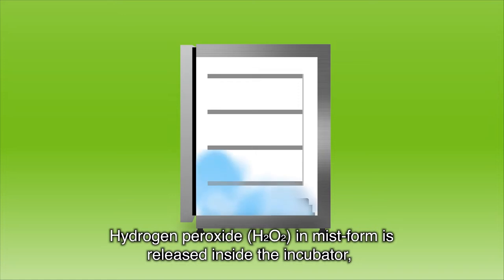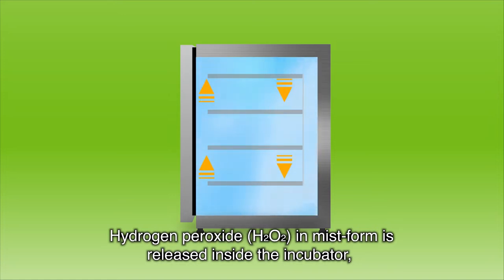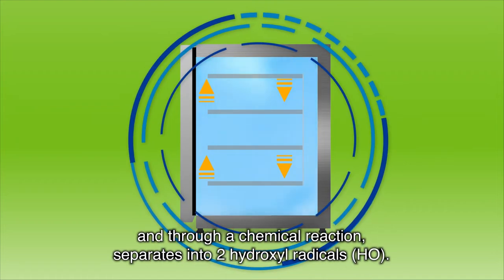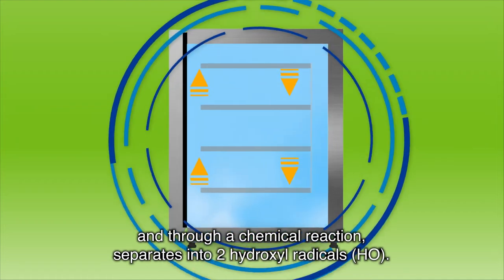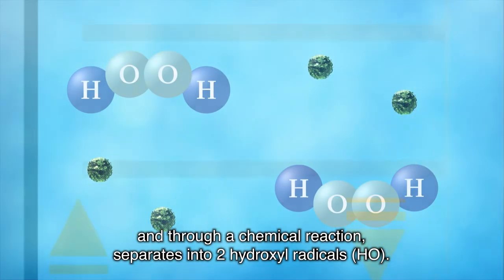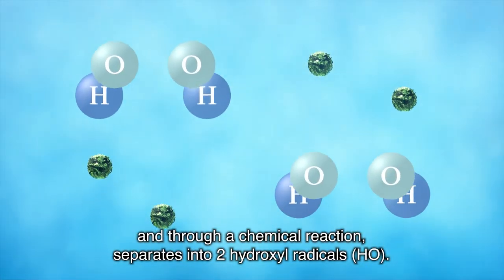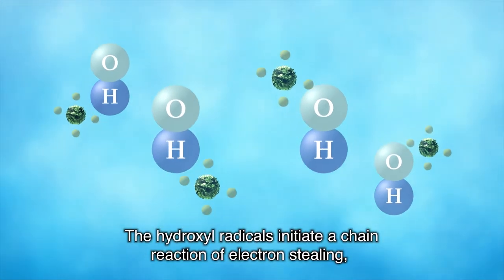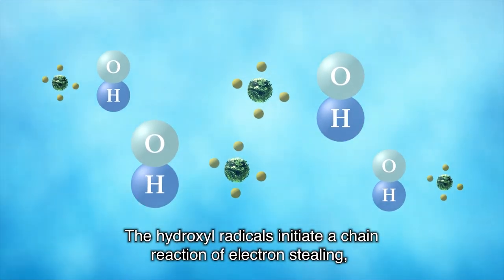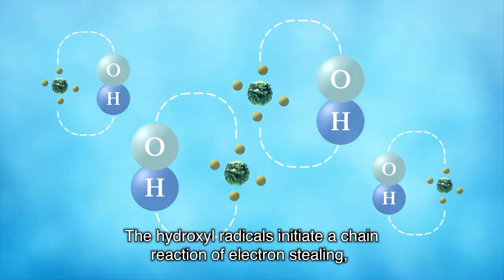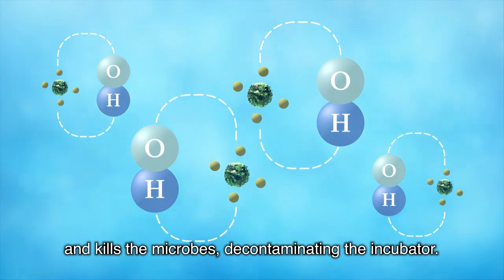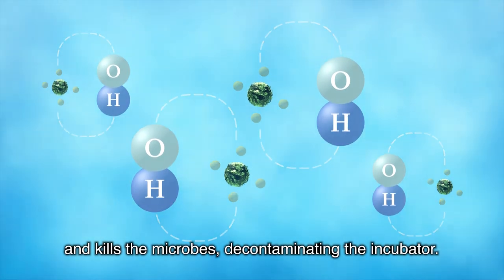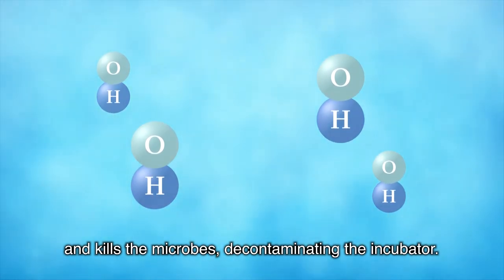Hydrogen peroxide H2O2 in mist form is released inside the incubator and through a chemical reaction separates into two hydroxyl radicals, HO. The hydroxyl radicals initiate a chain reaction of electron stealing and kills the microbes, decontaminating the incubator.